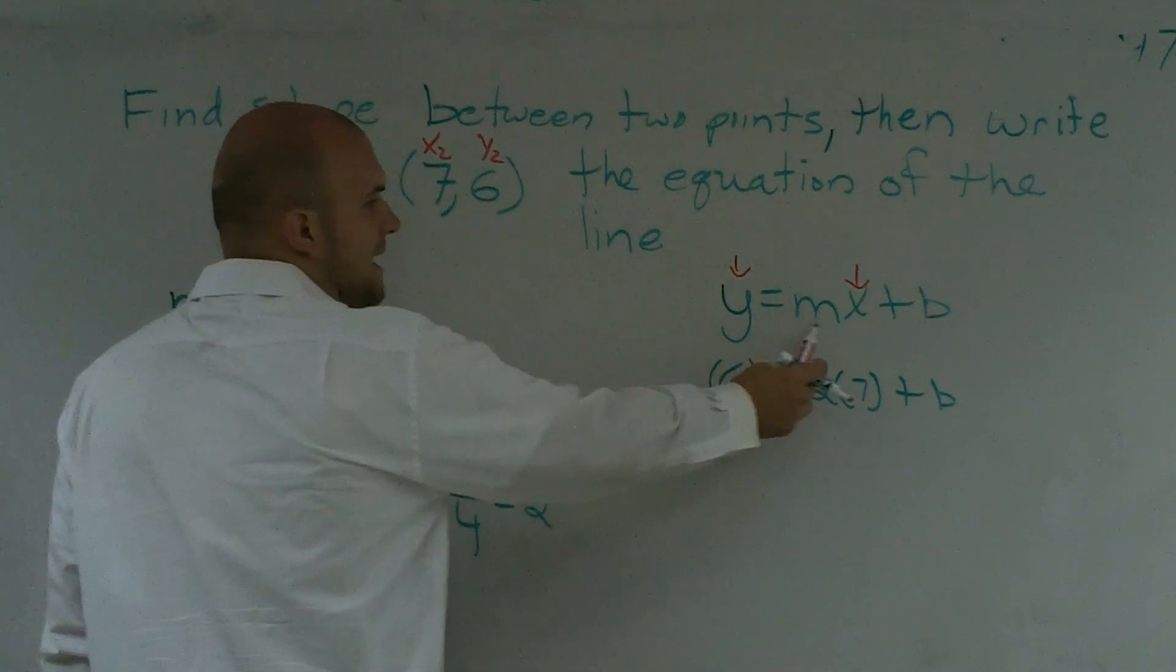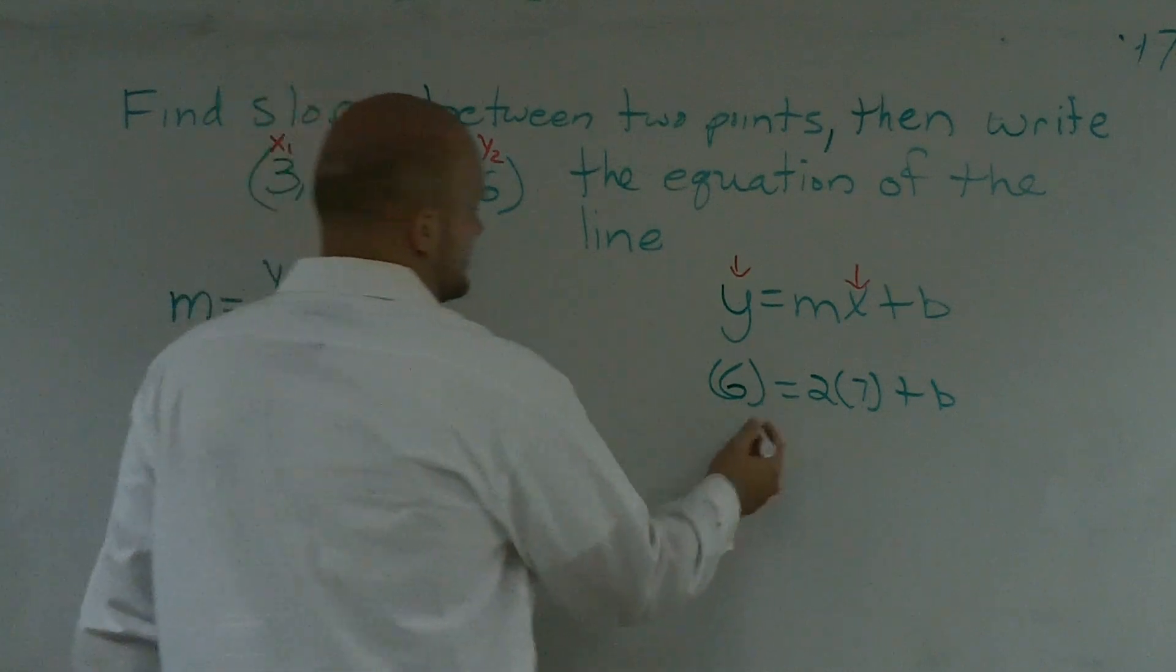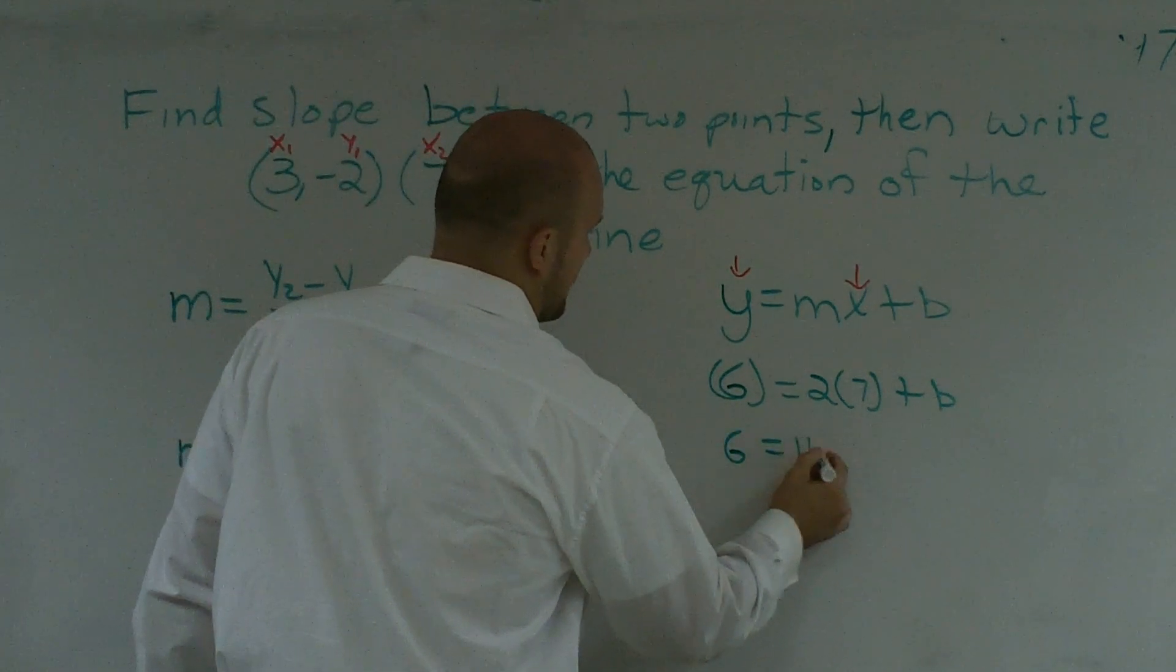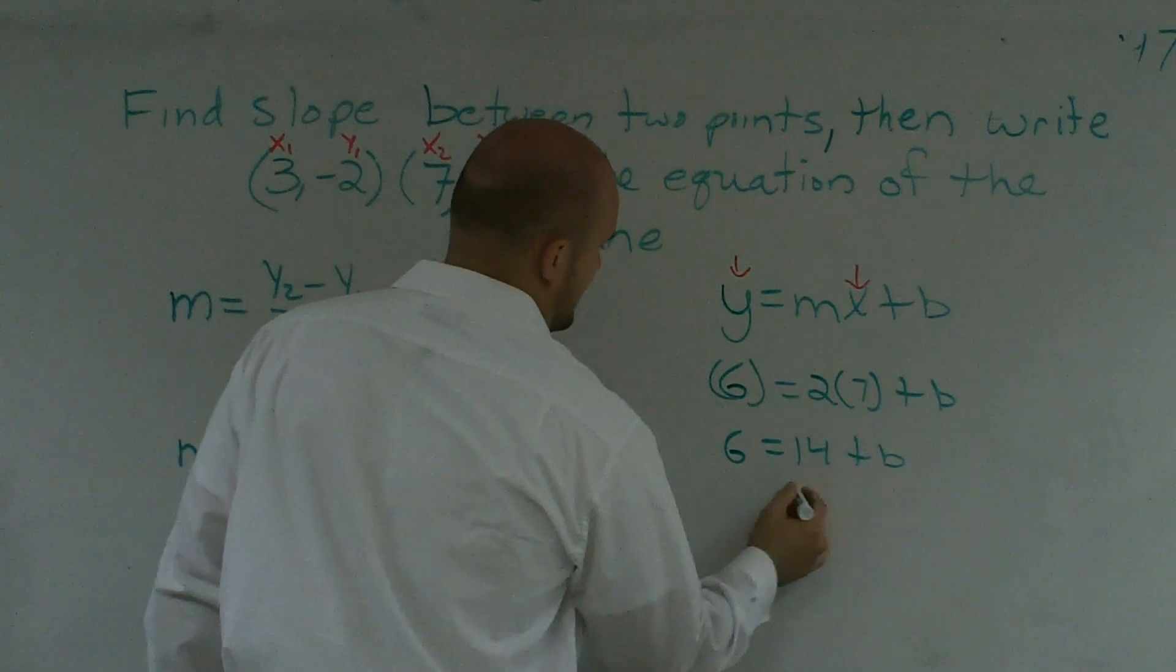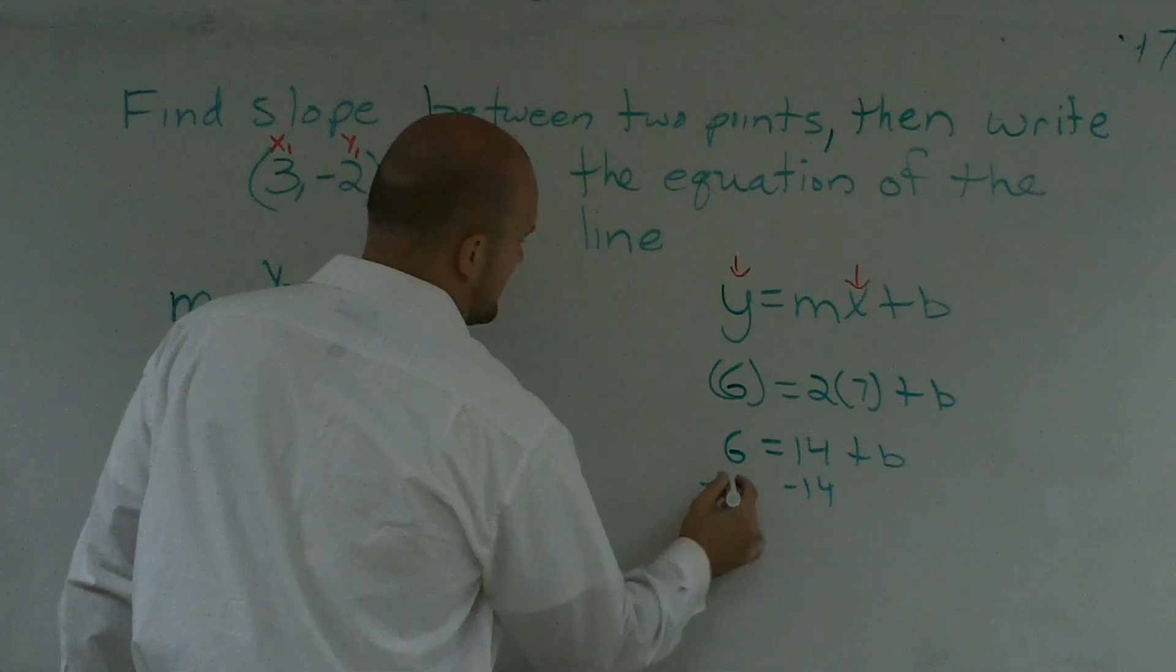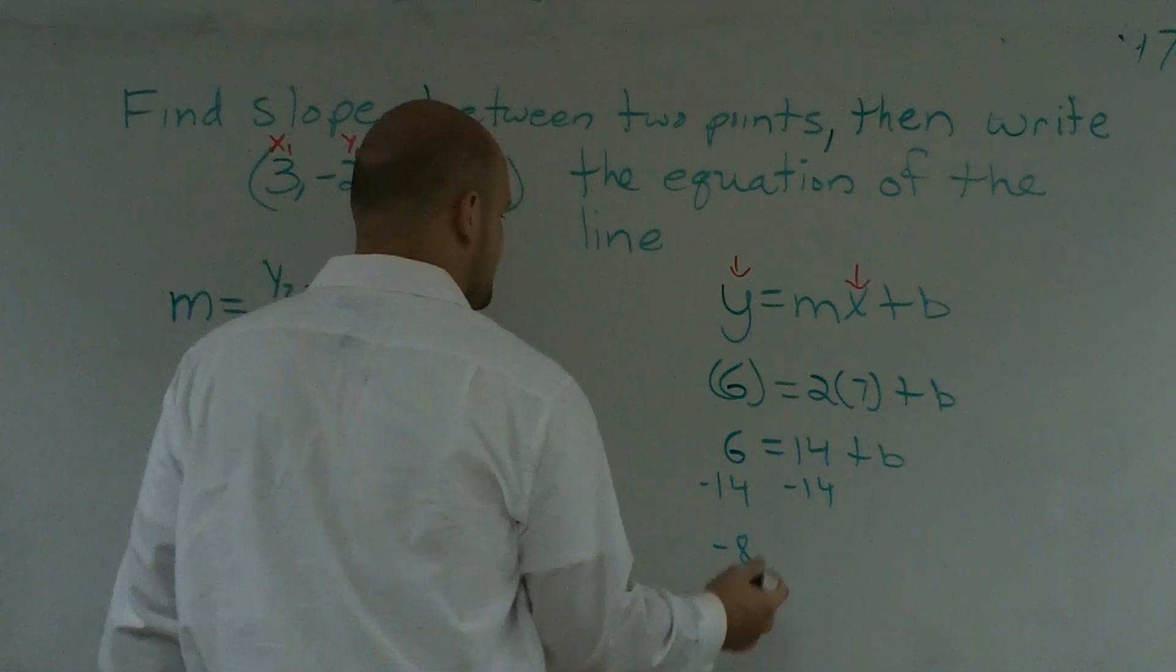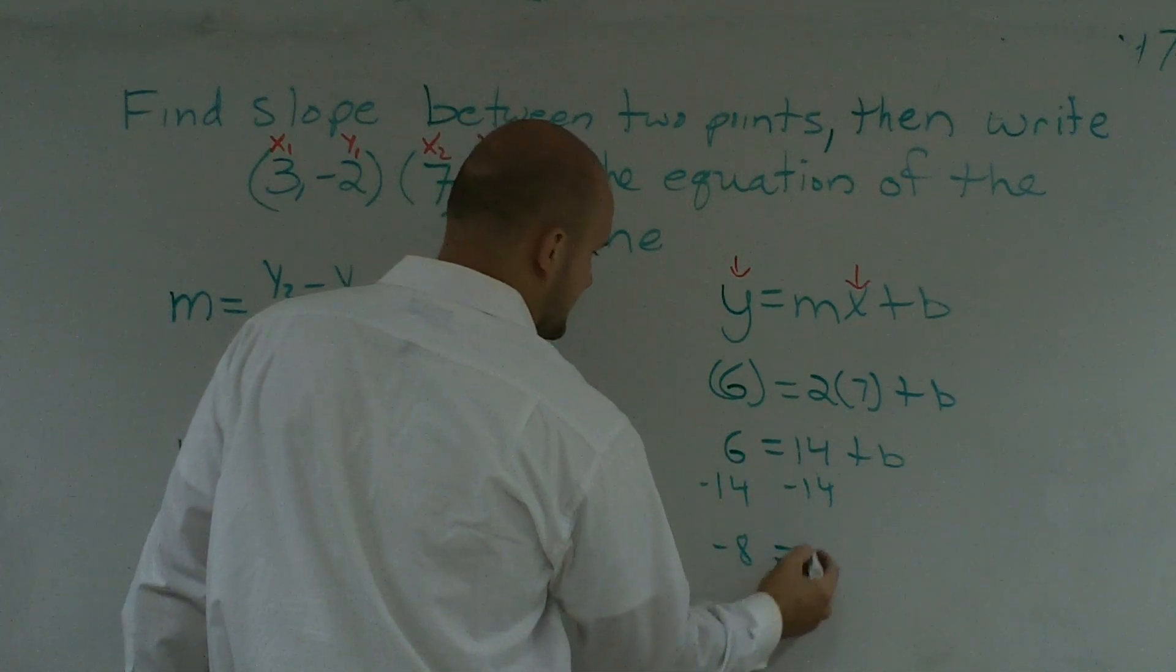Because once I know what my m is, once I know what my b, I have an equation of the line. So I get 6 is equal to 14 plus b, minus 14, minus 14, negative 8 equals b.